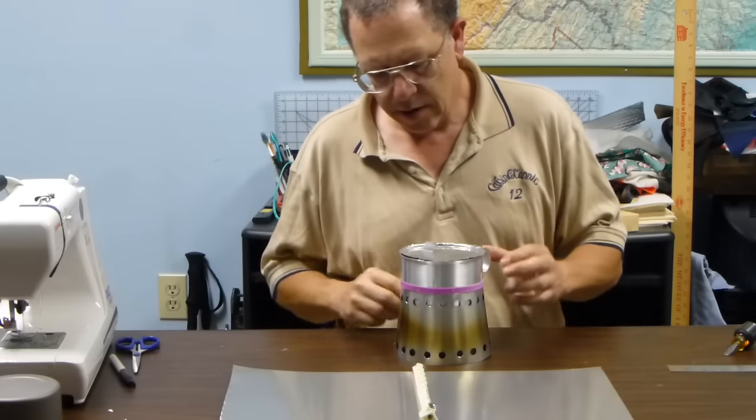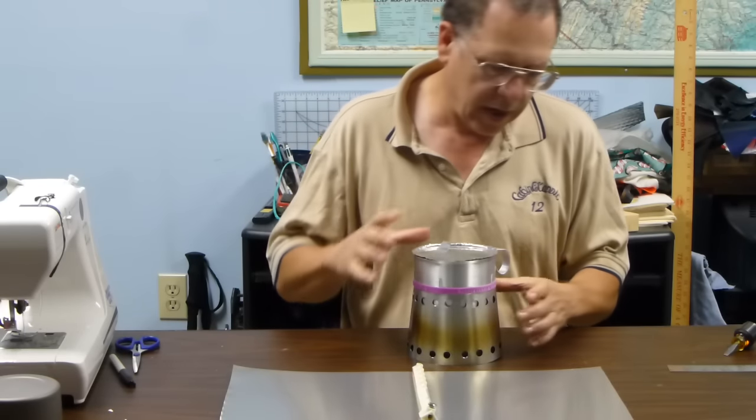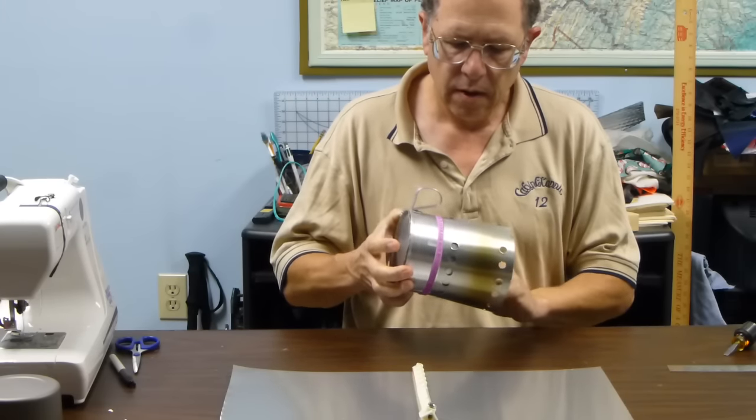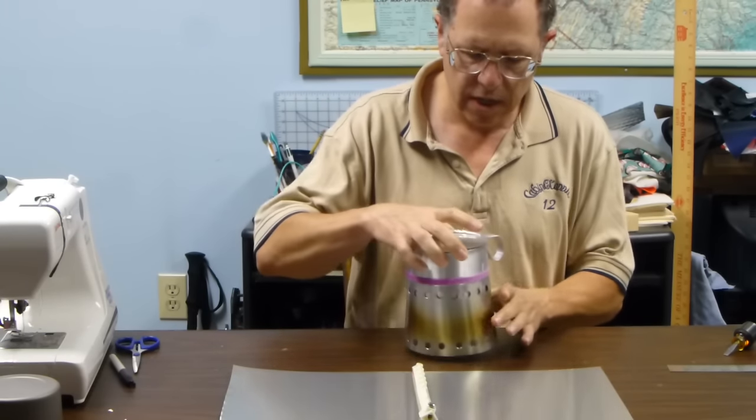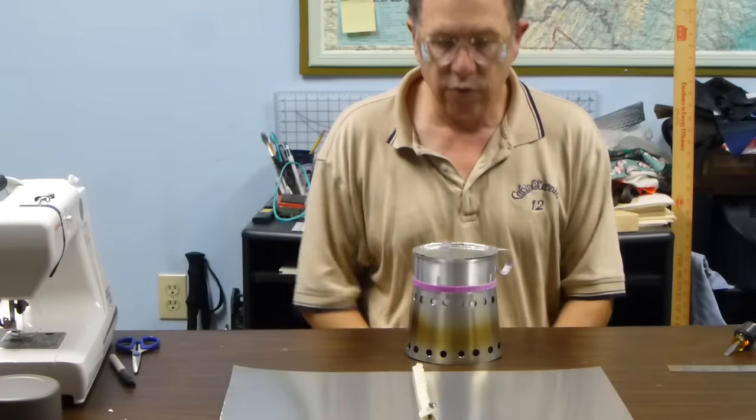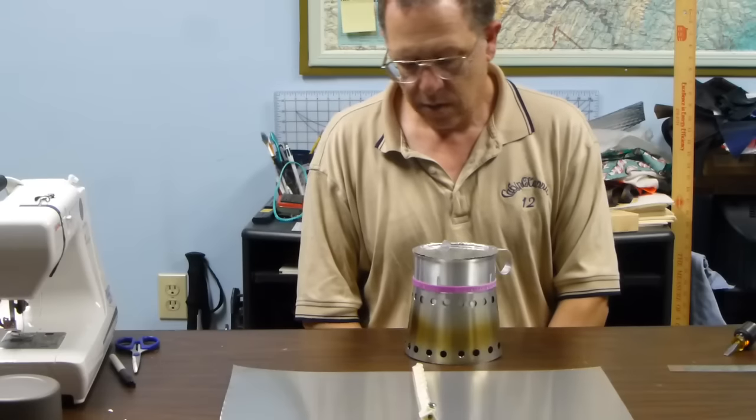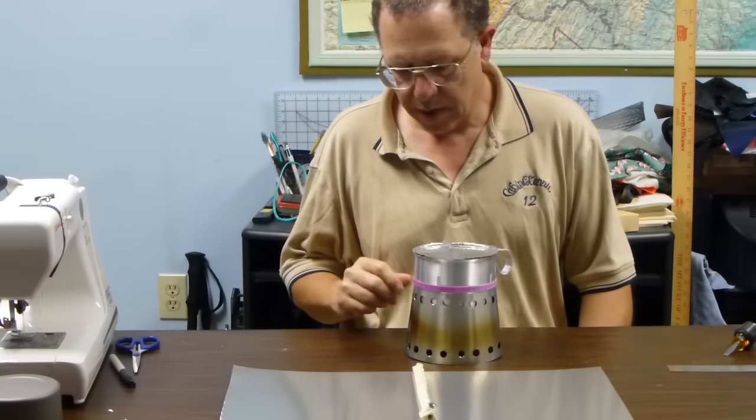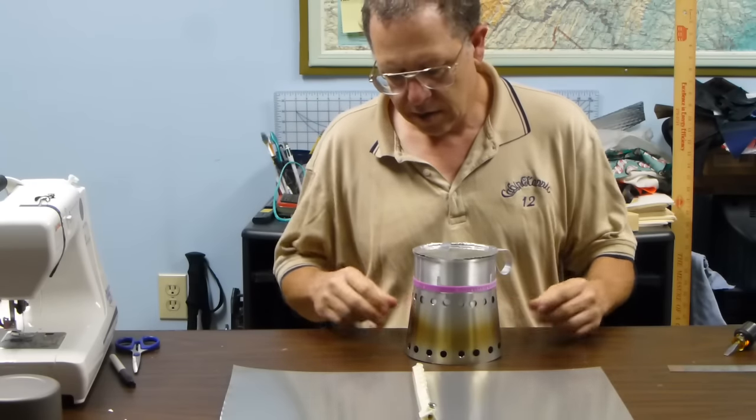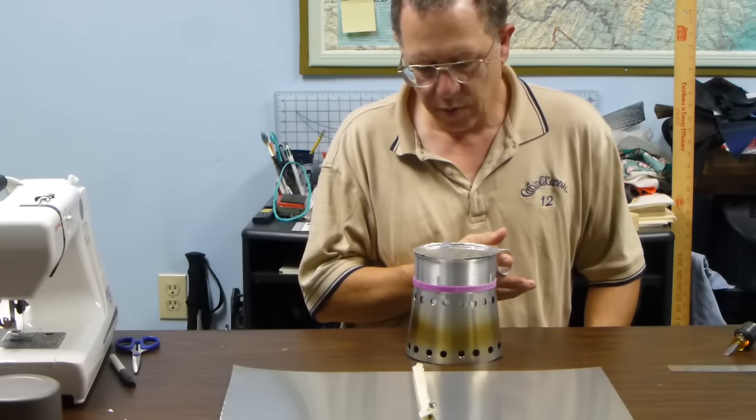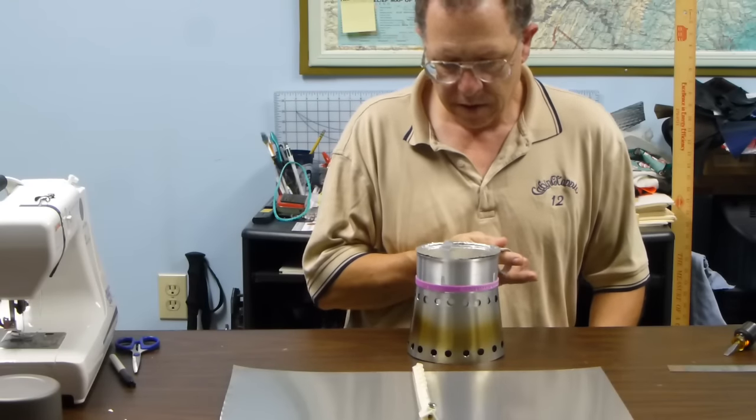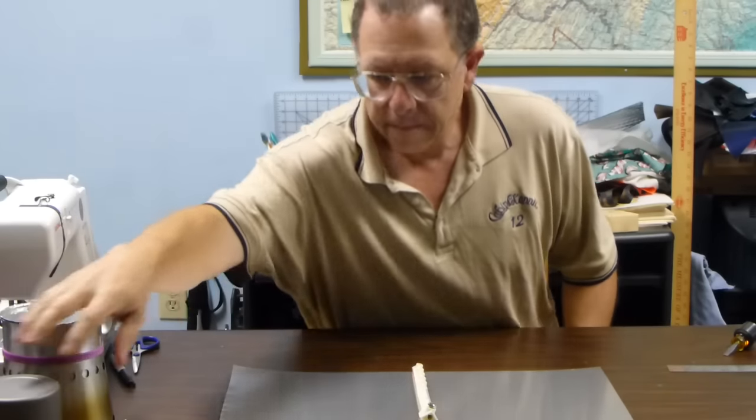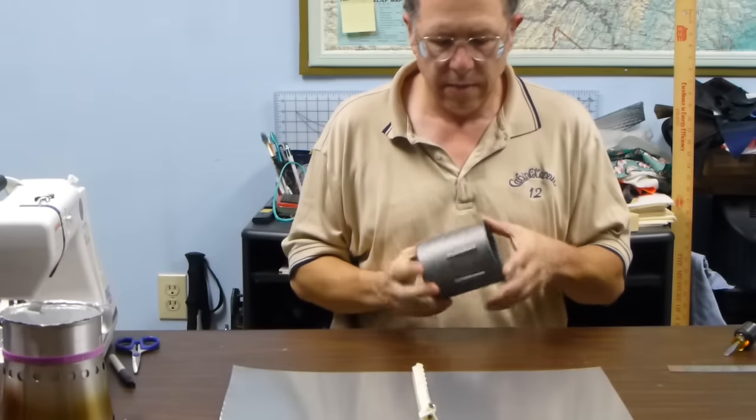A caldera cone acts as a windscreen and basically concentrates the heat. It's especially useful for an alcohol stove. It's very affected by wind and this will concentrate the heat and bring you to a boil with much less fuel. So let me get to it and show you how I made one of these.